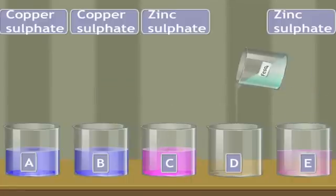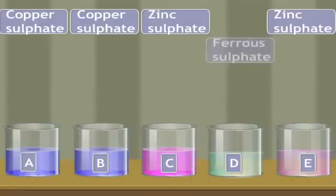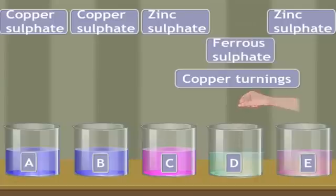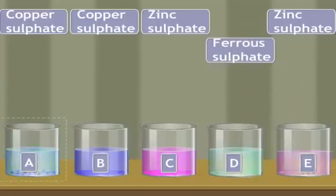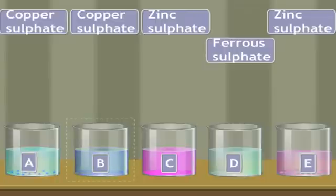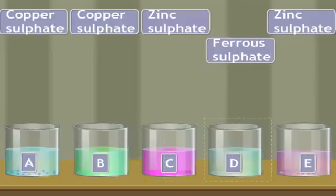Now note that the blue color of the solution in beaker A has disappeared. This is because zinc replaces copper from copper sulfate. In beaker B, the solution turned green. This is because iron has replaced copper from the copper sulfate solution. There's no change in the other three beakers C, D, and E.